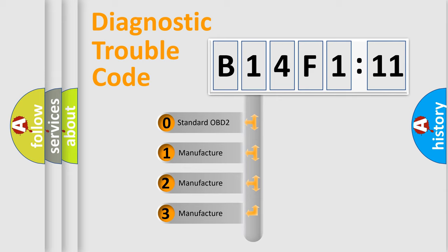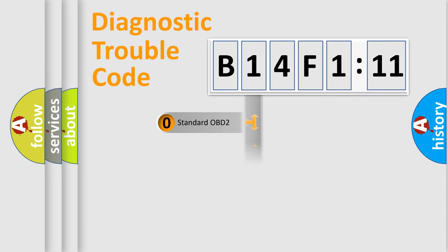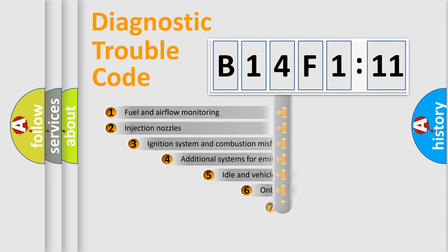If the second character is expressed as zero, it is a standardized error. In the case of numbers 1, 2, or 3, it is a manufacturer-specific expression of the car-specific error.